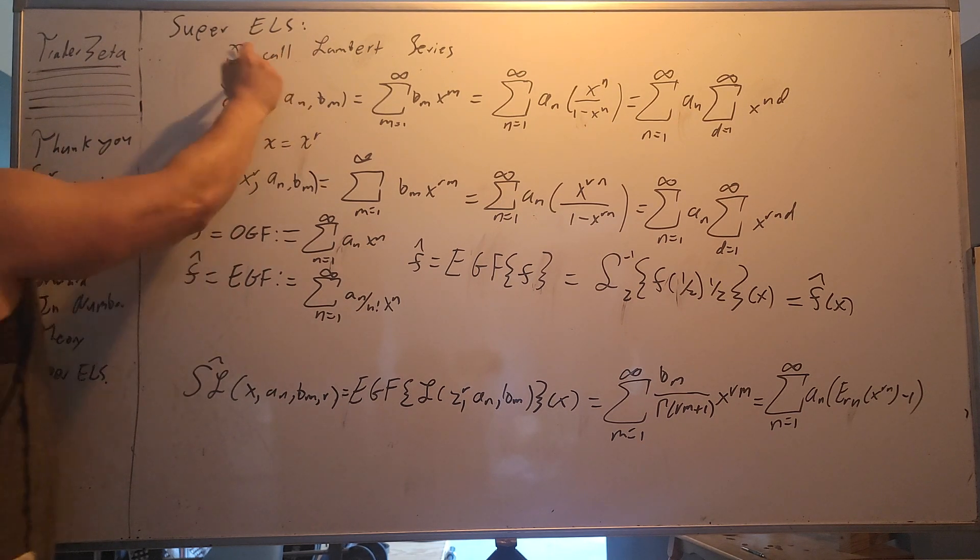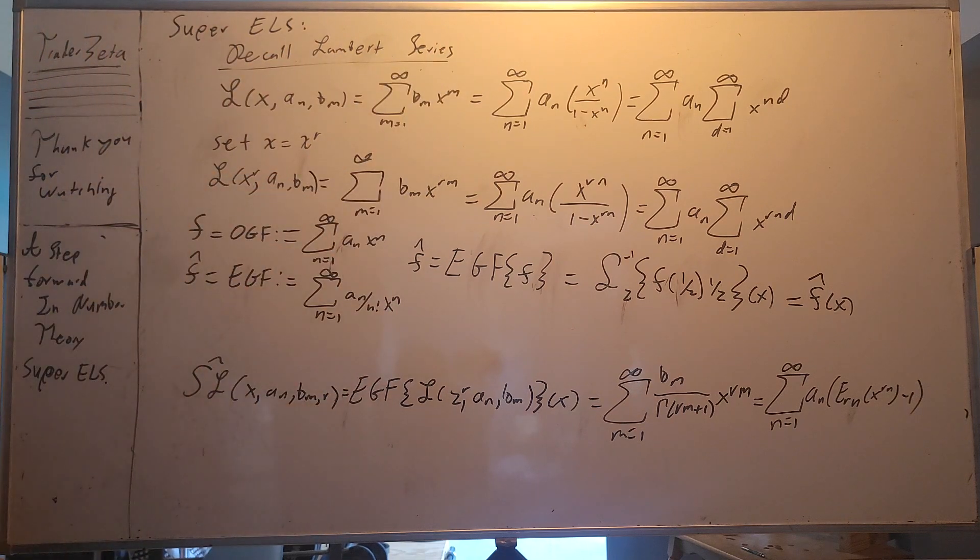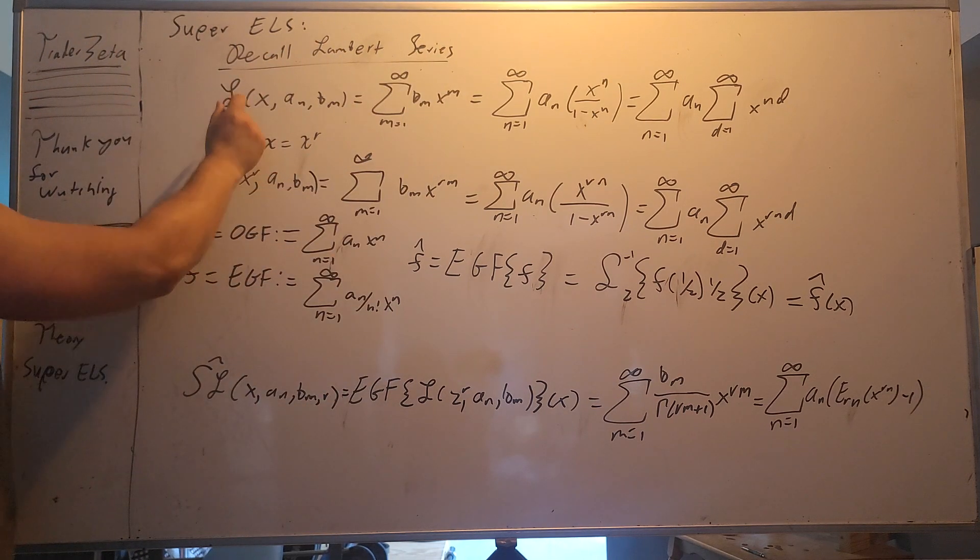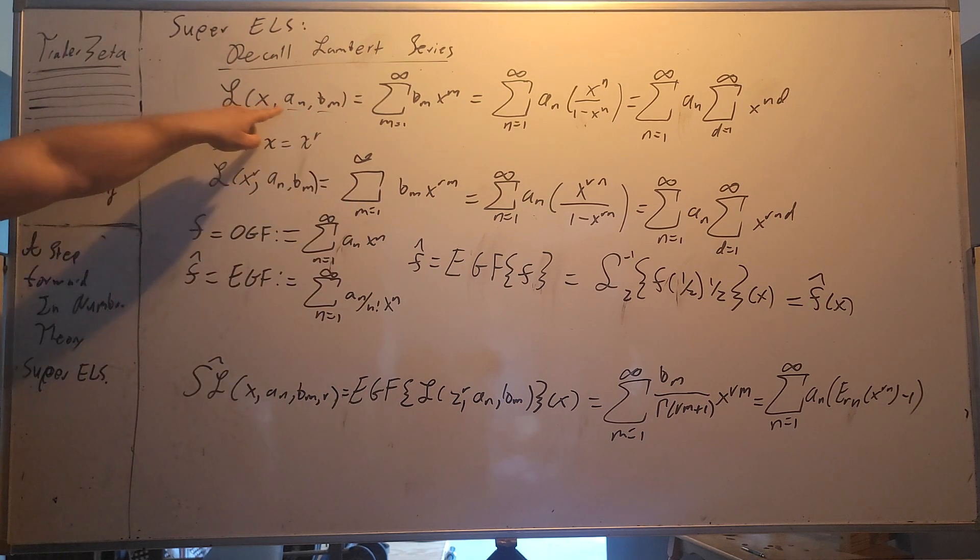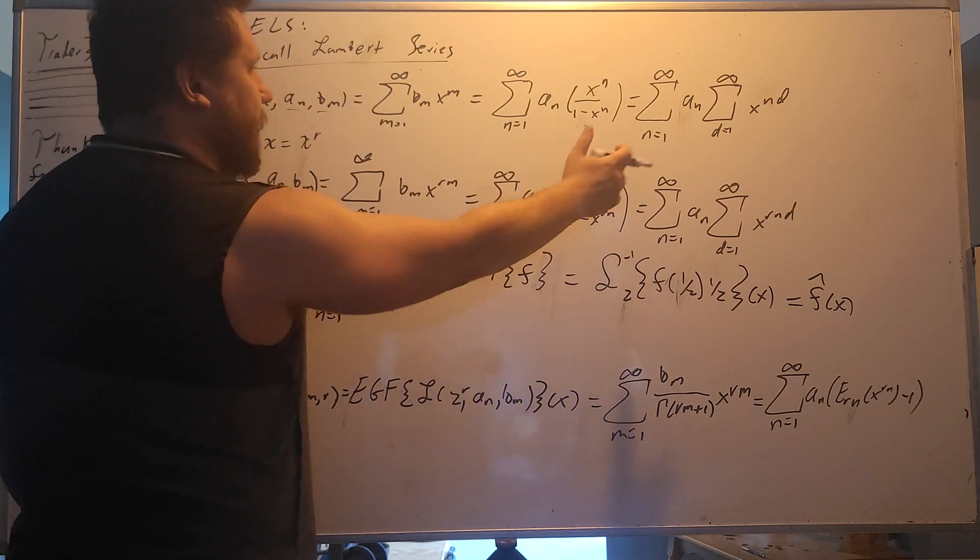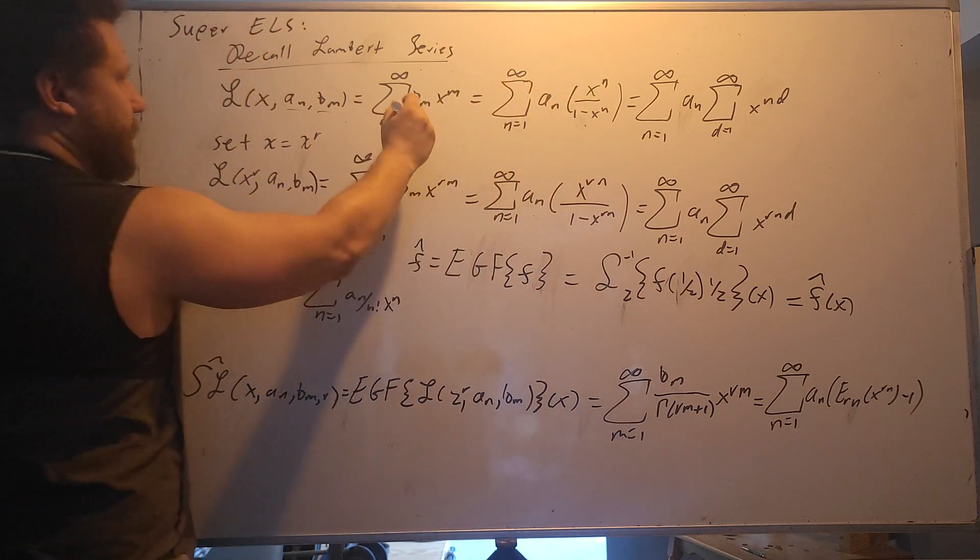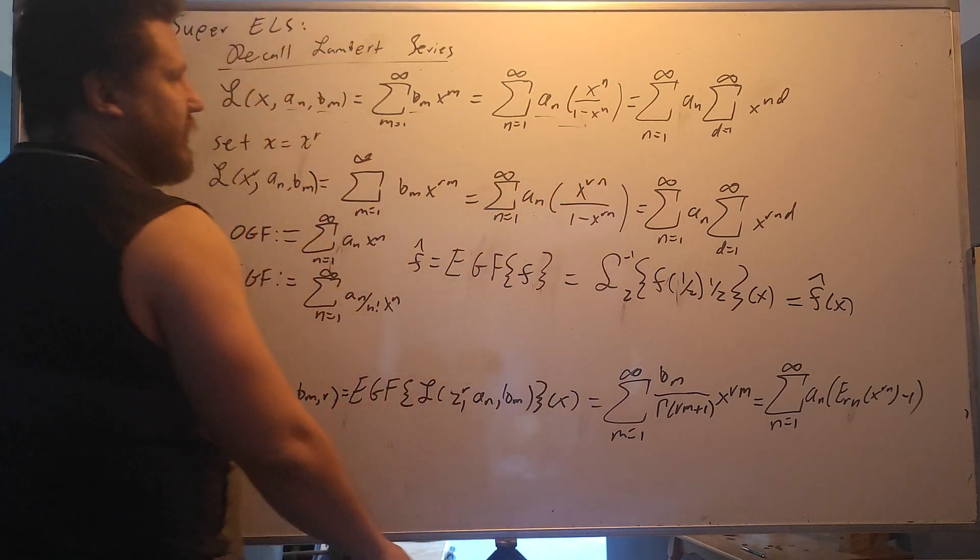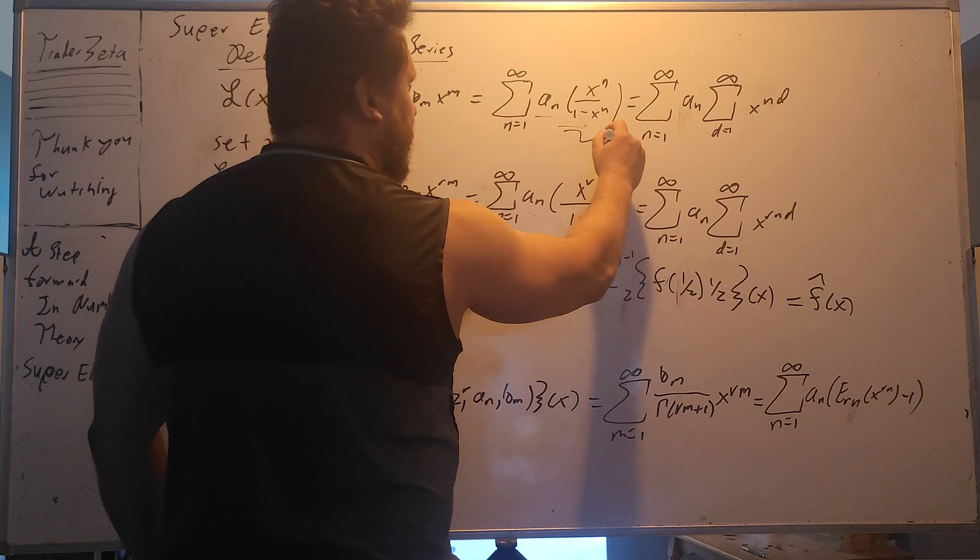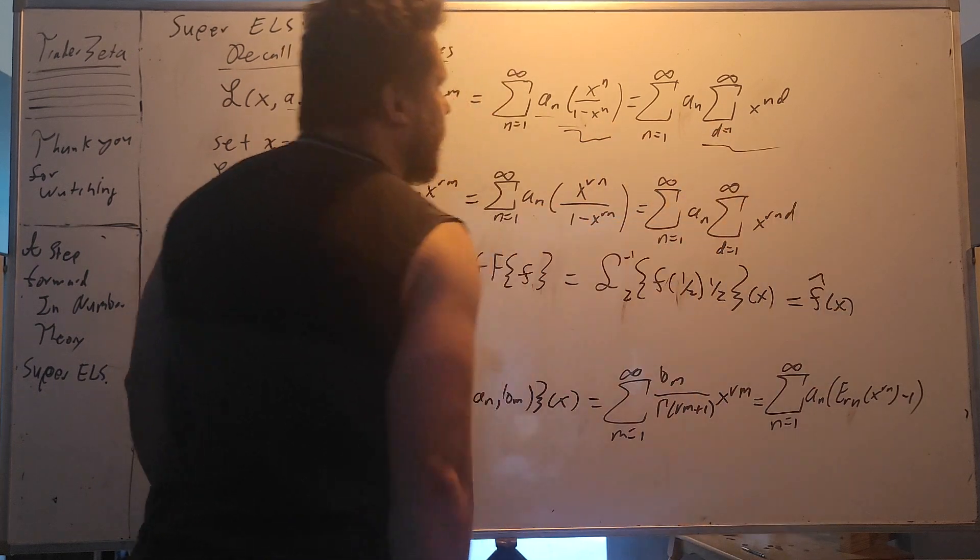We recall the regular Lambert series, and we denote it with this curly L of x. You have your a sub m, b sub m, and these two are connected by the Mobius Inversion Formula, which is a Dirichlet Convolution. This is just the classical series with b sub m here, a sub m here, and your generating function.